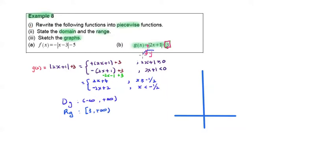Because we have positive y here, the graph is open upward. Determine the vertex here. How to find the x? This gives us x as negative 1 over 2, and the y is 3.